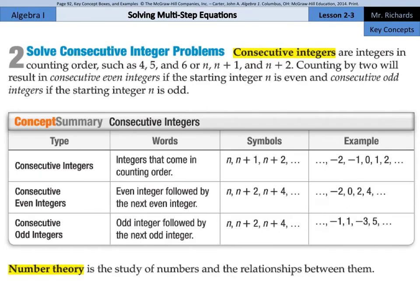This next key concept kind of answers that question of, you know you're in algebra when... Solve consecutive integer problems. Consecutive integers are integers in counting order, such as 4, 5, 6. Or, if you start with n, n, n plus 1, n plus 2. Counting by 2 will result in consecutive even integers if the starting integer is even, and consecutive odd integers if the starting integer is odd.